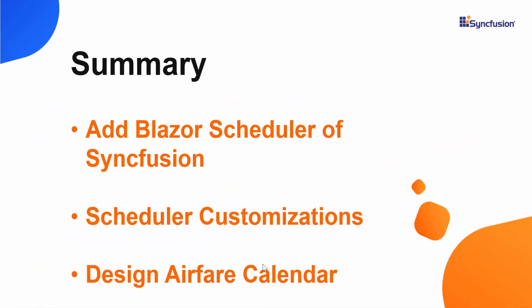Alright, now let me summarize some of the important points which we have learnt so far. We have seen how to add a Blazor scheduler of Syncfusion to a WebAssembly app. And then we saw how to customize the Blazor scheduler and display it as a fare calendar using its built-in properties and styling options. You can get this working example from the GitHub link shared in the below description. You can also let us know in the comments section if you need any clarifications or additional customizations with this fare calendar. If you really find this video helpful, click the like button and subscribe to our channel to watch more videos like this.